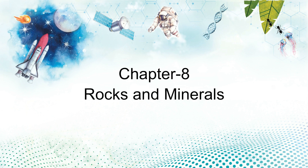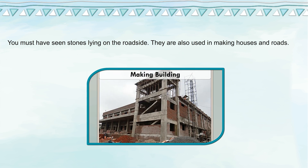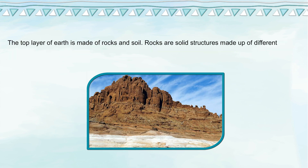Chapter 8: Rocks and Minerals. You must have seen stones lying on the roadside. They are also used in making houses and roads. You may also have seen big rocks in mountains or near rivers. Have you ever wondered how these were made? The top layer of earth is made of rocks and soil.